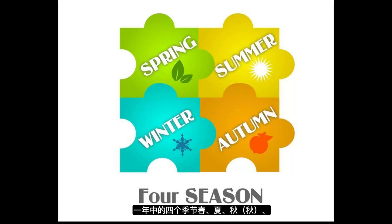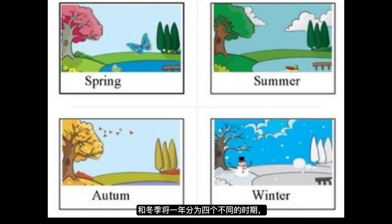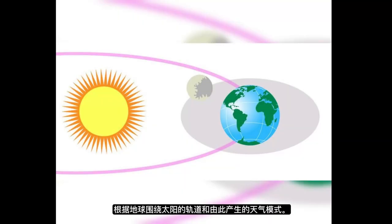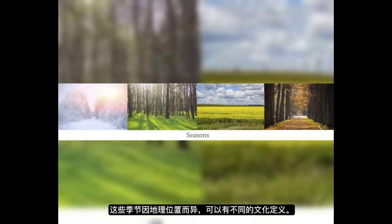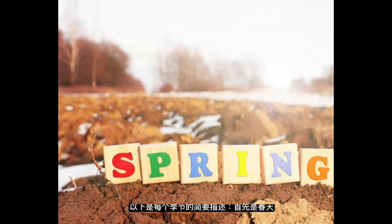The four seasons of the year — spring, summer, autumn, fall, and winter — divide the year into four distinct periods based on the Earth's orbit around the sun and resulting weather patterns. These seasons vary depending on geographic location and can have different cultural definitions. Here's a brief description of each season.